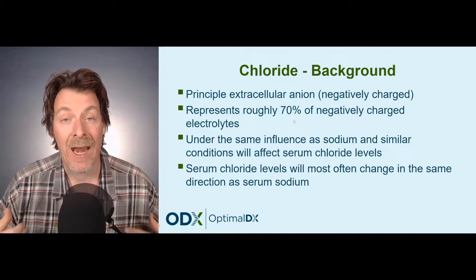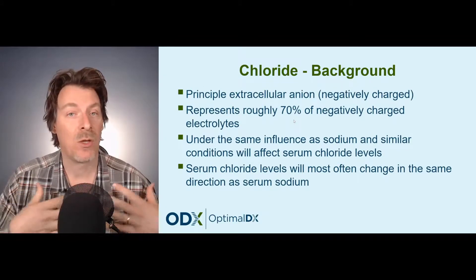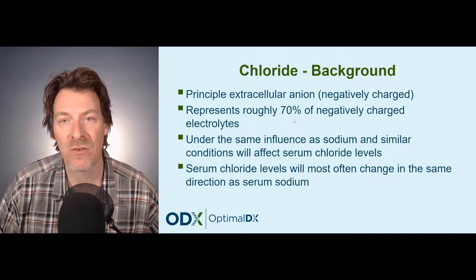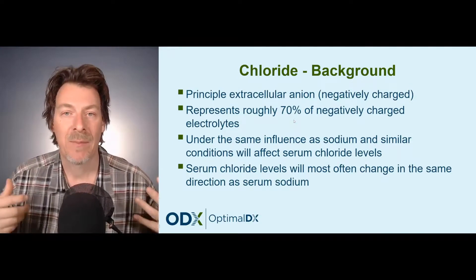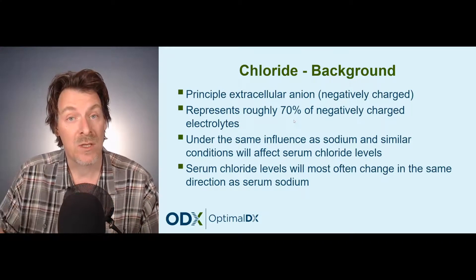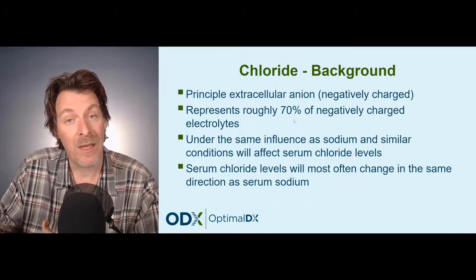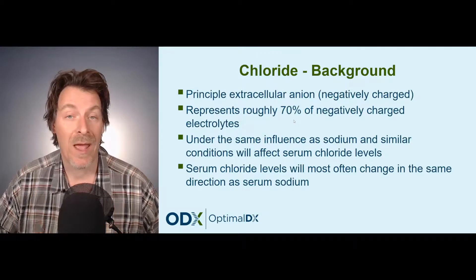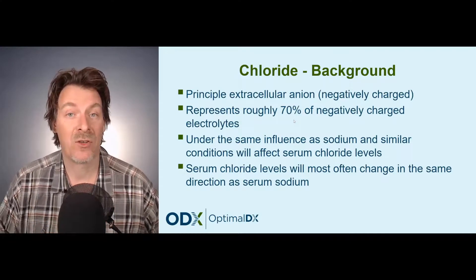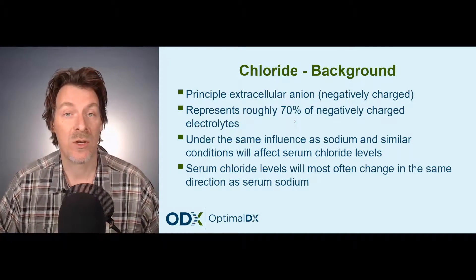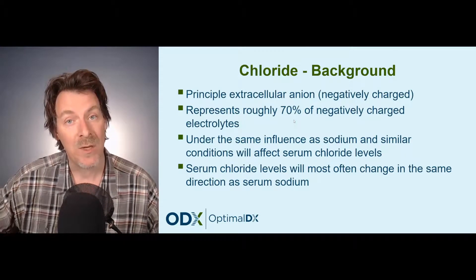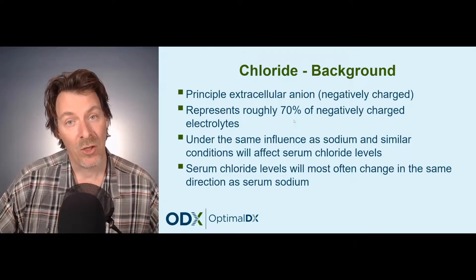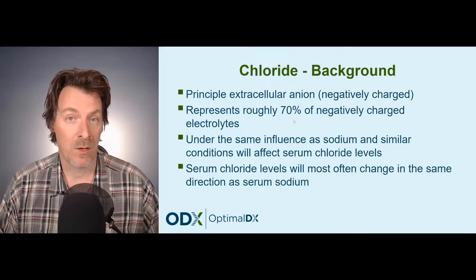Similar conditions are going to affect serum chloride levels. Coming back to our good old friend aldosterone — you should be really sick and tired of hearing about aldosterone — but basically aldosterone causes the body and the kidneys to hold on to sodium. So increasing levels of aldosterone cause the body to hold on to serum sodium, decreasing the amount lost in urine, therefore serum sodium goes up and urine sodium goes down.